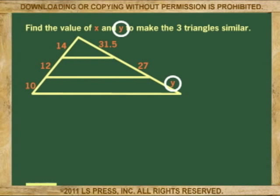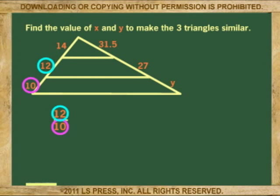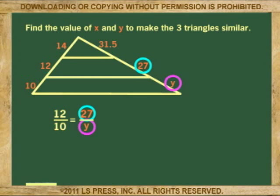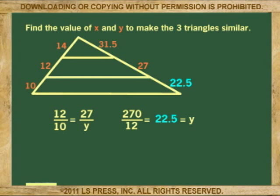Now, to find y. To find y, we set up the proportion corresponding to the value 10, because 10 is corresponding to y. So, 12 is to 10, as 27 is to y. Multiplying across, 10 times 27 is 270. 270 divided by 12, y is 22.5. The larger triangle is also similar if y is 22.5.